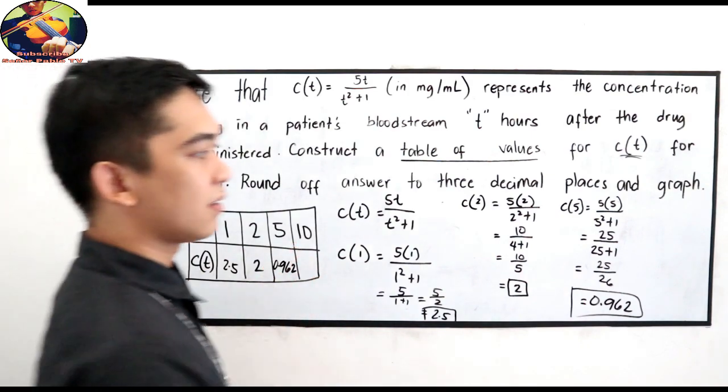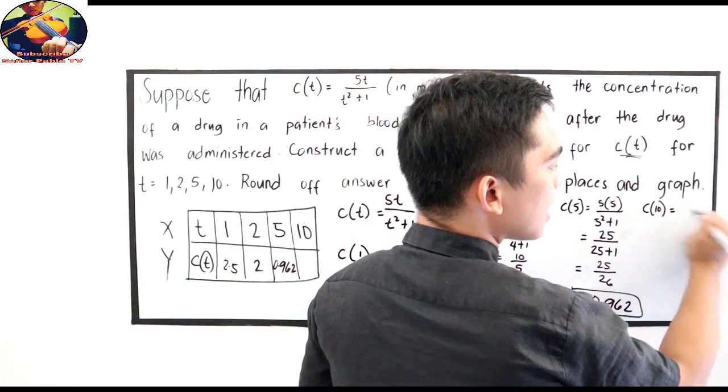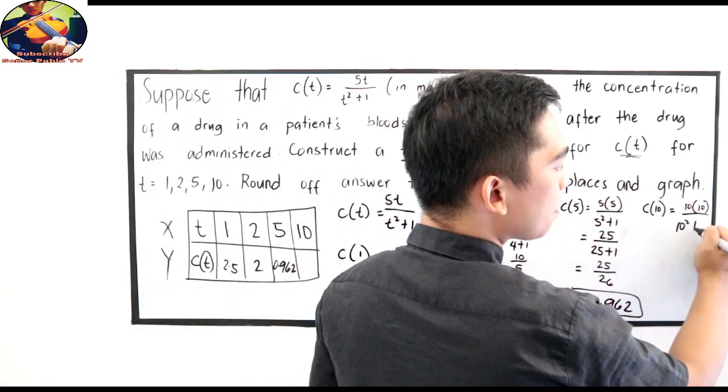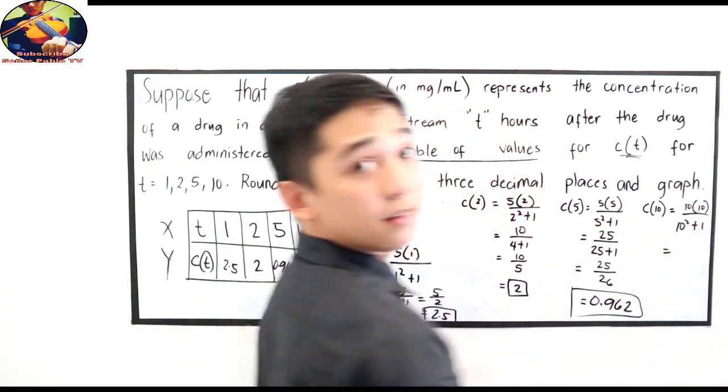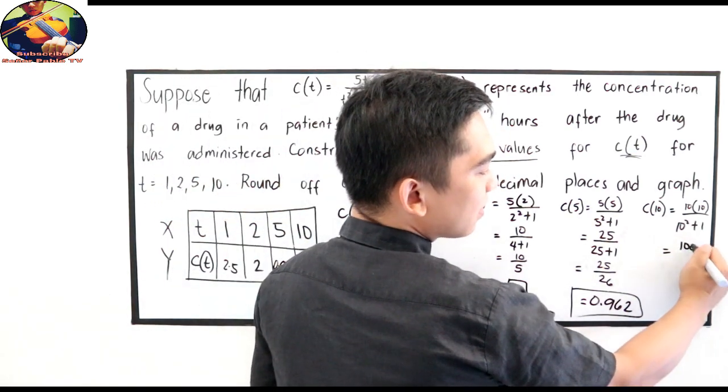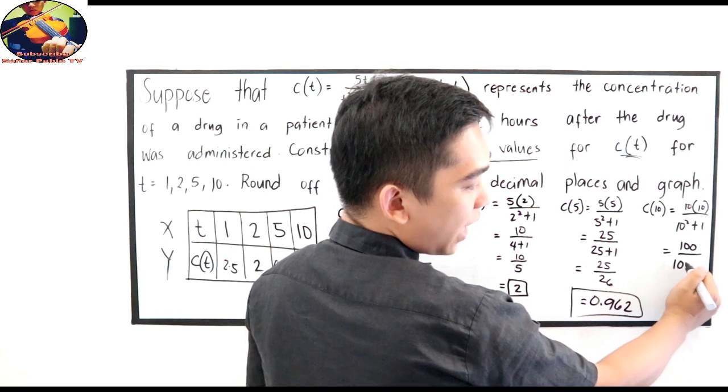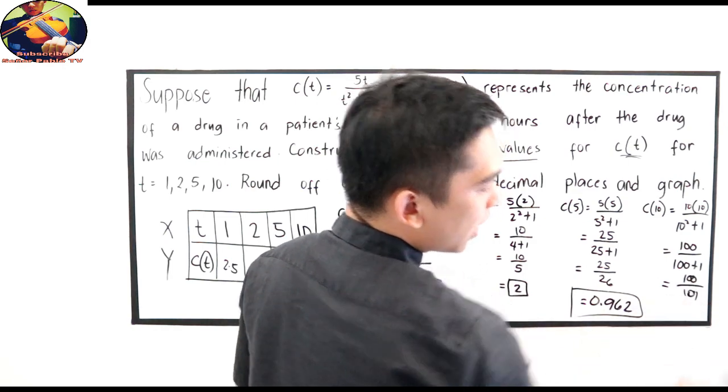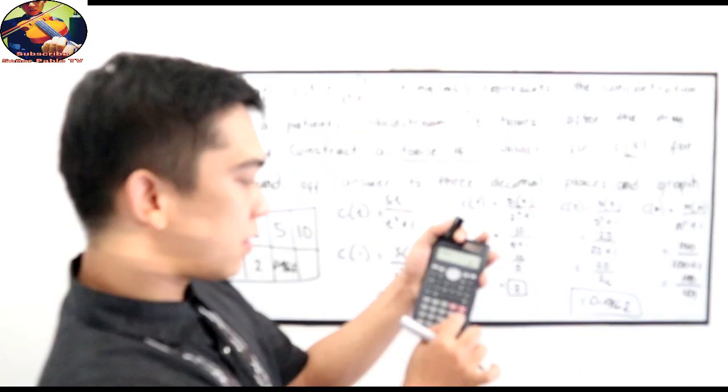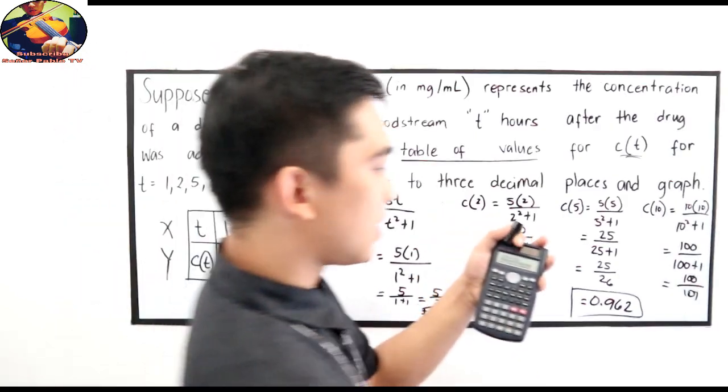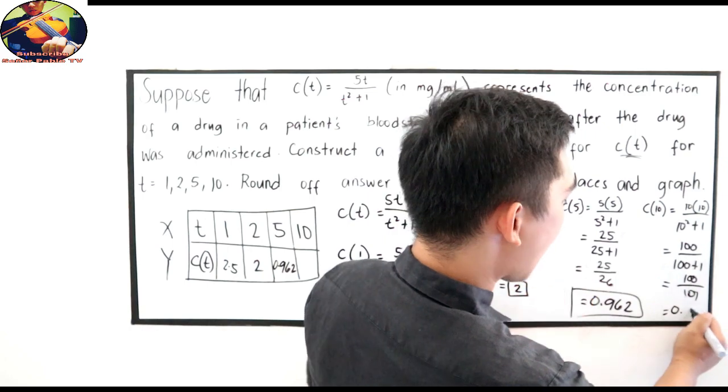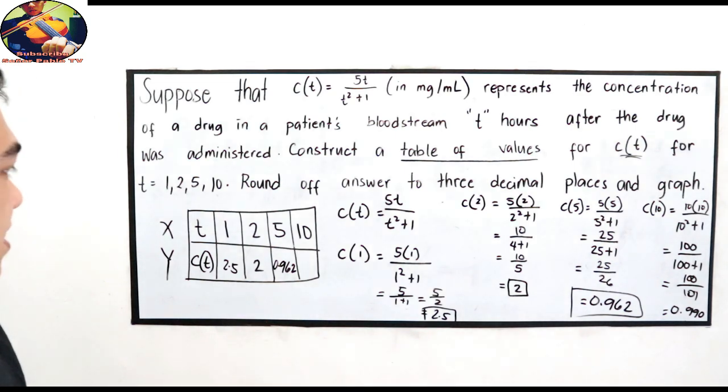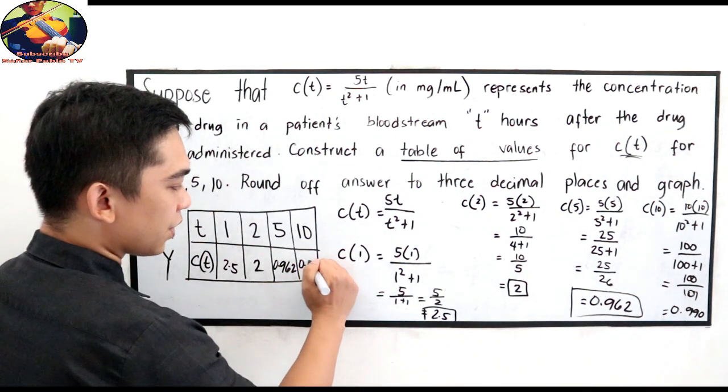And then, last, 10. C of 10 is equal to 10 times 10 all over T squared, 10 squared plus 1. 10 times 10, 100 all over 10 squared, 100 plus 1. So, this is now 100 over 101. Divide, 100 divided by 101. 0.990. So, there it is. We've completed our table of values. 0.990.